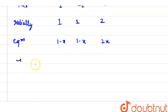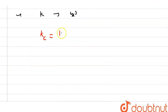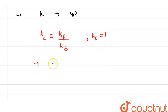Before substituting into the equilibrium expression, we need to find the value of Kc. It is given that the rate constants of the forward and backward reactions are equal. We know that the equilibrium constant is the ratio of the forward to the backward rate constant: Kc = kf / kb. Since kf = kb, Kc = 1.